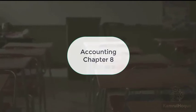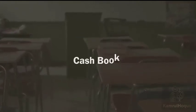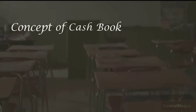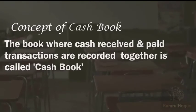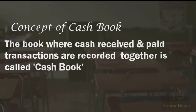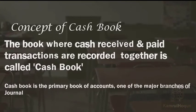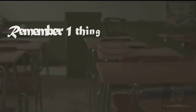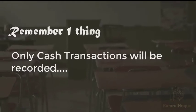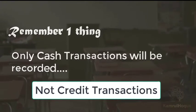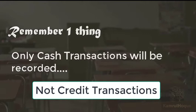Accounting chapter 8 is about the cash book. The cash book is the book where cash received and paid transactions are recorded together. It is the primary book of accounts and one of the major sub-journals. Only cash transactions will be recorded in the cash book — not credit transactions. On-account or on-credit transactions are not recorded here.